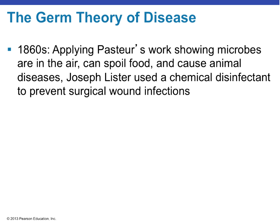In the 1860s, applying Pasteur's work showing microbes can be in the air and spoil food, Joseph Lister developed a chemical disinfectant to prevent surgical wound infections. He would spray this disinfectant on surgical wounds — at that time, surgery was very likely to result in death due to secondary infections from microorganisms. He developed a compound we now call Listerine. We no longer use it for surgery, but we do use it as a mouthwash, and its chemical composition is very similar to what Joseph Lister originally used.